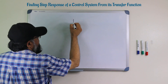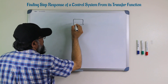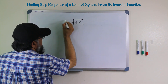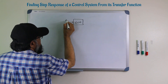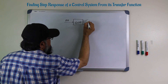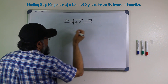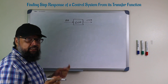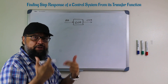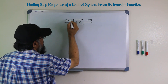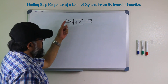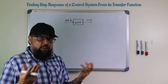Let us say that we have a system denoted by G(s) and we apply an input which is denoted by R(s) and the output of the system is denoted by C(s). Let us say that this input is a step input, which is represented by 1 divided by s. So this is our step input. So let's start with the transfer function.